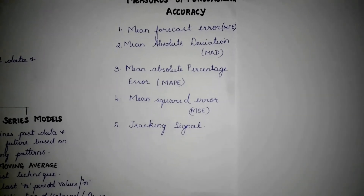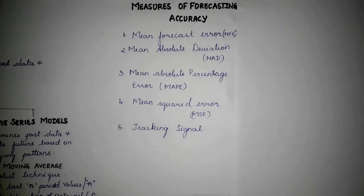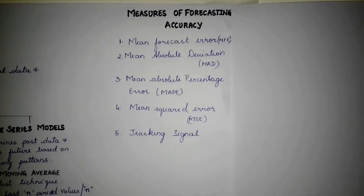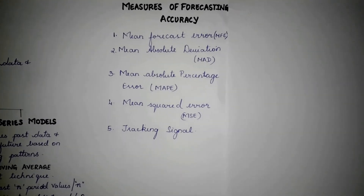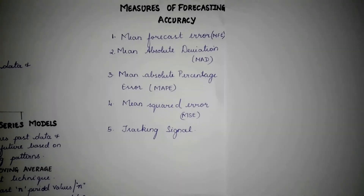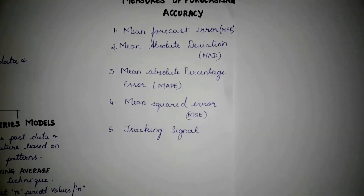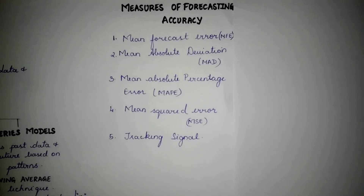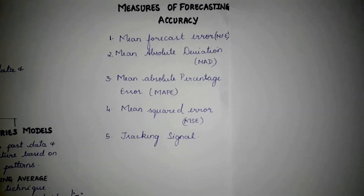Tracking signal acts as an indicator to identify any sort of bias in the forecasting model, thereby suggesting modifications to the forecasting model. Tracking signal helps enhance the forecast value by setting limits. Any time the tracking signal goes beyond the set limits, it acts as an indicator suggesting that modifications have to be made in the forecasting model to reduce the bias.